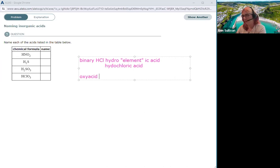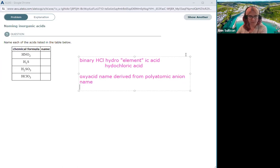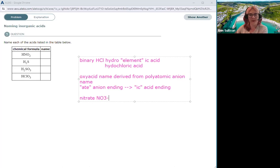The easy thing to remember is that an ate anion ending goes to an ic acid ending. So what do I mean? For example, say I had the nitrate ion, NO3 minus.